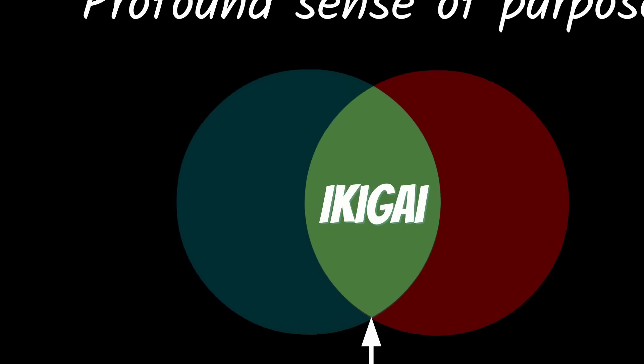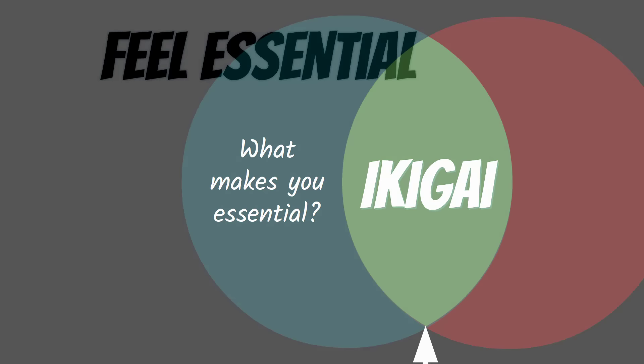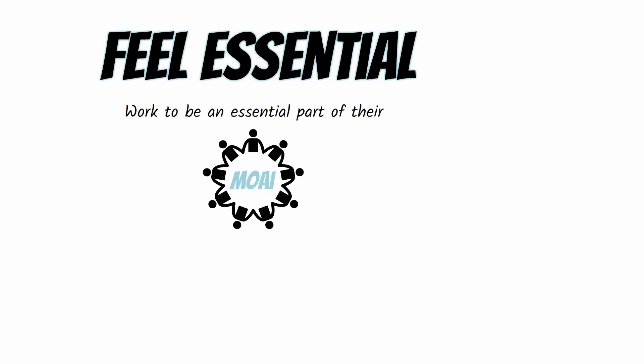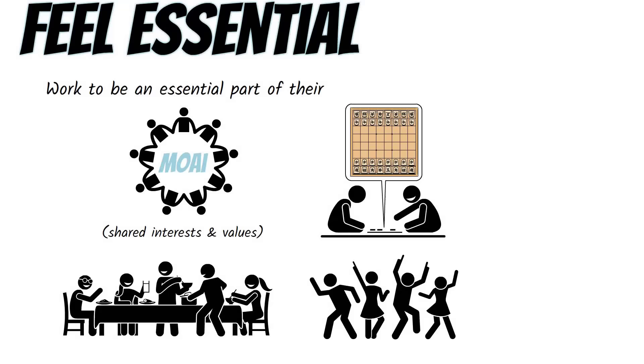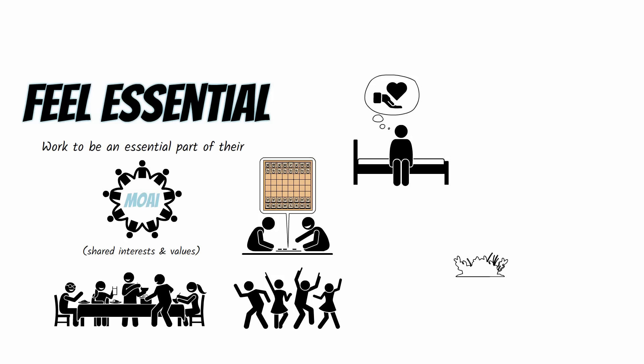The first circle represents what makes you essential. Okinawans work to be an essential part of their moai. A moai is a tight-knit social group with shared interests and values who look out for one another. Members of a moai eat together, organize large games of Go and shogi, which is Japanese chess, and other group hobbies. Okinawans wake up each day looking for ways to contribute to their moai. They share food that they grow in their gardens, and use what resources they have to support each other in times of need.